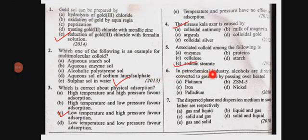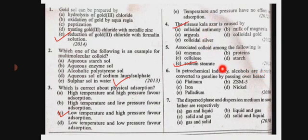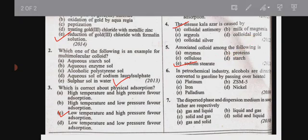In the petrochemical industry, alcohols are directly converted into gasoline by passing over heated ZSM5. Option B is ZSM5, because ZSM5 is a zeolite — a shape-selective catalyst. This is a direct question from the textbook. The answer is only ZSM5.